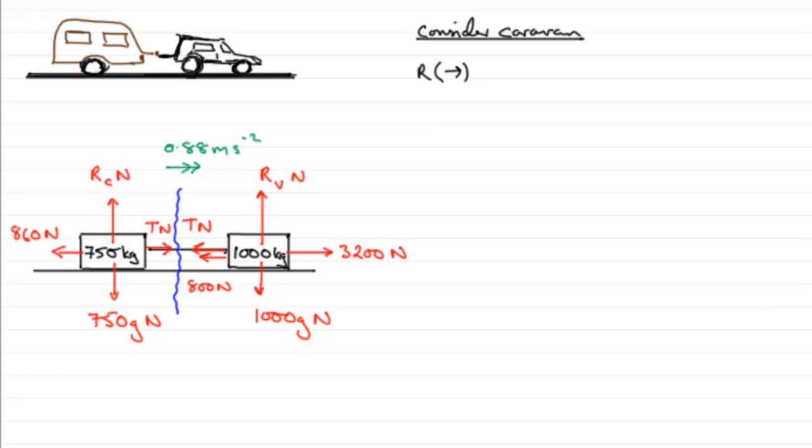Okay, welcome back. Let's have a look and see how you got on. If we resolve to the right, then it's T newtons acting to the right, so we're going to have T. We've got the 860 newtons that acts in the opposite direction, so that's going to be minus 860.